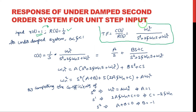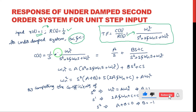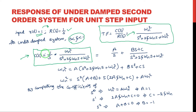The transfer function of a second order system is ωn² divided by (s² + 2ζωns + ωn²). For an underdamped system, the zeta value is between 0 and 1. The output response C(s) is found by multiplying the transfer function with the input value. Since R(s) = 1/s, C(s) becomes (1/s) into the transfer function. Now we need to apply the inverse Laplace transformation to get the time domain output.